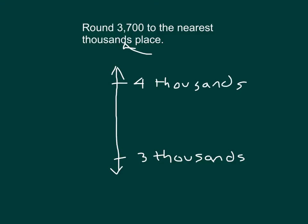So our rounded number is either going to be three thousands — which is also equal to three thousand in standard form — or four thousand. We next ask ourselves: what's halfway between three thousands and four thousands? Three thousand five hundred is halfway in between them.